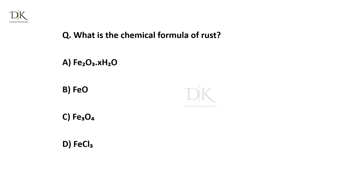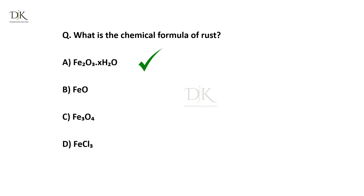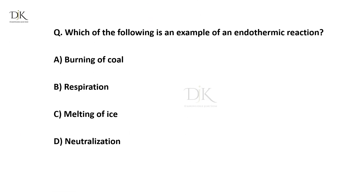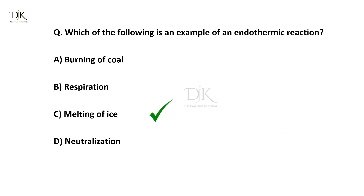What is the chemical formula of rust? The right answer is Fe2O3·xH2O. Which of the following is an example of an endothermic reaction? The right answer is melting of ice.